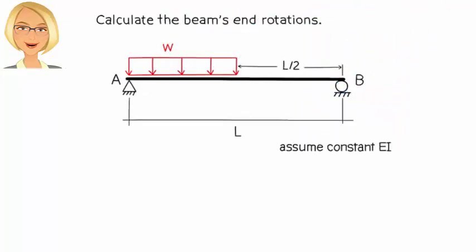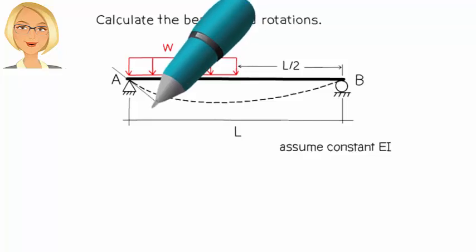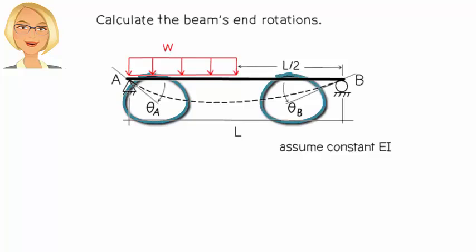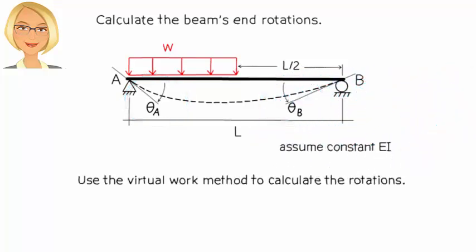Suppose we want to know how much the ends of this beam rotate. Here is the general deformed shape of the beam. We have a clockwise rotation at A and a counterclockwise rotation at B. Let's refer to them as theta A and theta B, respectively. To determine these rotations, we can use the virtual work method.